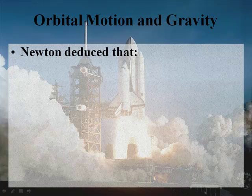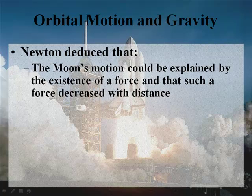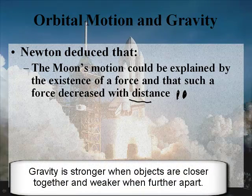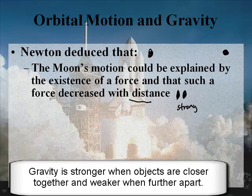What did he deduce? He deduced a number of things. He deduced that the motion of the moon could be explained by the existence of a force, and that such a force decreased with distance. That means gravity is strong when objects are close — these two objects right here would have a strong force between them. And it is weak when they're far away: two planets far apart would have a weaker force between them, assuming the same mass. So it varied with distance.